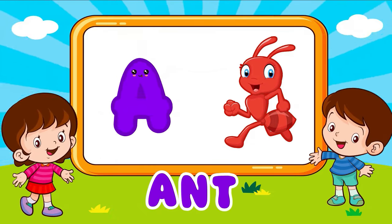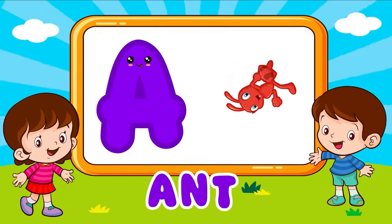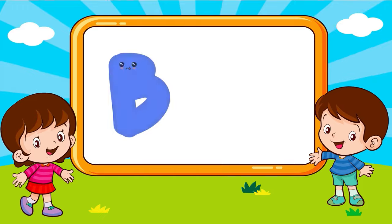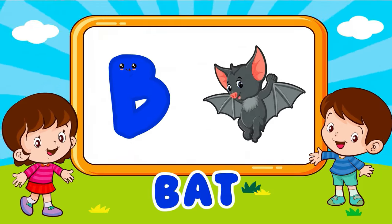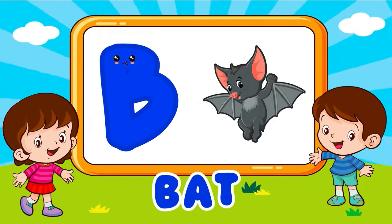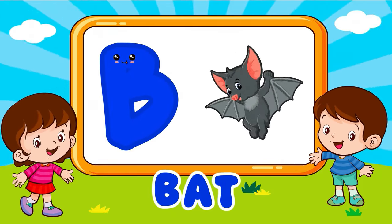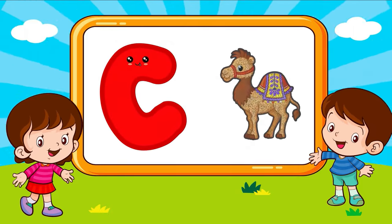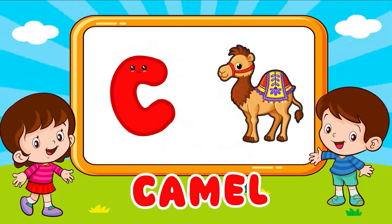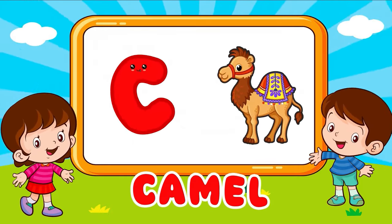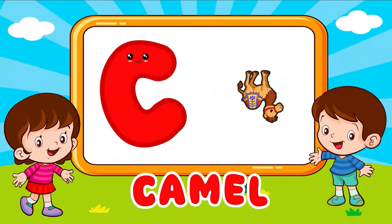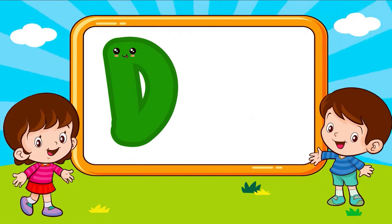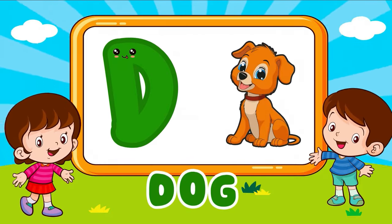Zebra. A is for ant. A, A, ant, A is for ant. A, A. B is for bat. B, bat, B is for bat. B, B. C is for camel. C, camel, C is for camel. C, C. D is for dog. D, dog, D is for dog. D, D.